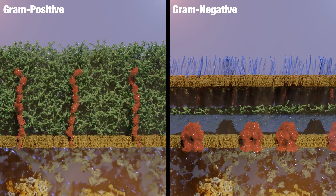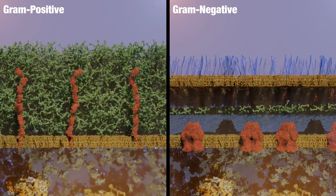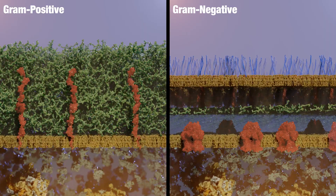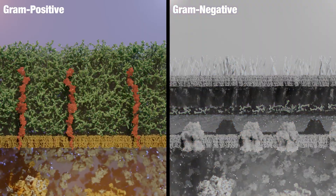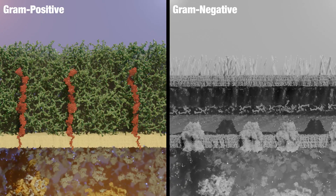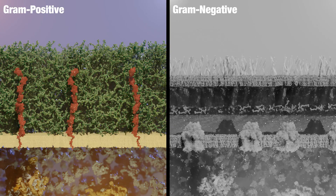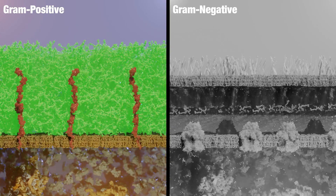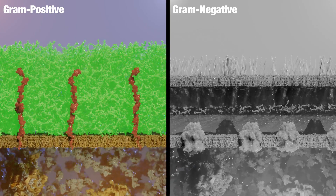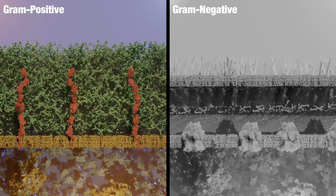We differentiate bacteria into two major groups, gram-positive and gram-negative, based on their cell wall. The gram-positive cell wall is relatively simple: an inner phospholipid bilayer about 5 nanometers thick, followed by an extremely thick peptidoglycan wall. This dense layer is approximately 50 nanometers thick.